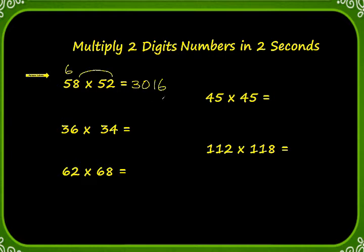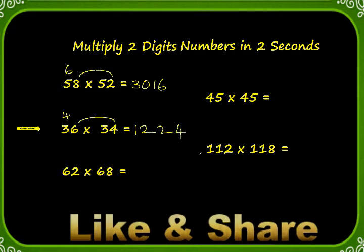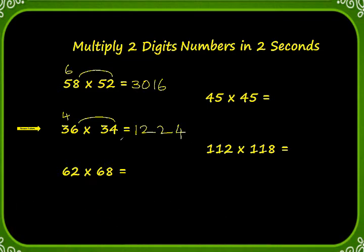Let's do the next one: 36 times 34. What is the next number after 3? Four. 3 times 4 is 12. Multiply these two: 4 times 6, or 6 times 4, is 24. That's all, this is the answer: 1224. Let's proceed - 62 times 68. The next number to 6 is 7. 6 times 7 is 42, 2 times 8 is 16. The answer is 4216.